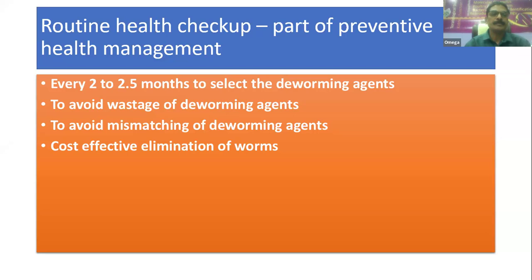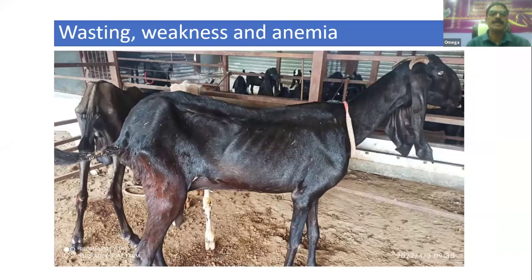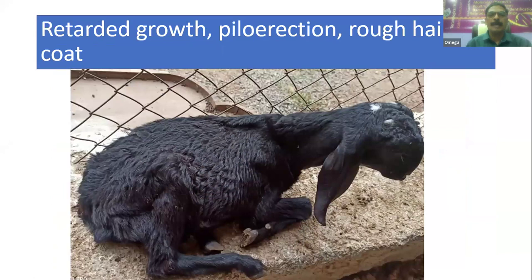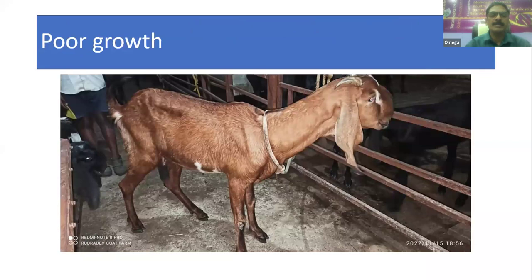The pictures themselves indicate wasting, weakness, and anemia — the body score of these animals is definitely not good. We should go for fecal sample examination in such cases. Other indications include retarded growth, piloerection, and rough hair coat. If you see animals whose hair is not glistening or is very rough, and piloerection is present, fecal sample examination is indicated. Also, if the animal's age is appropriate but body weight is poor, fecal examination should be performed.